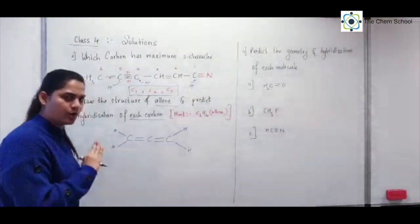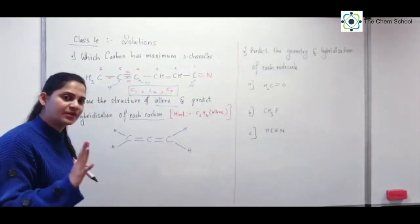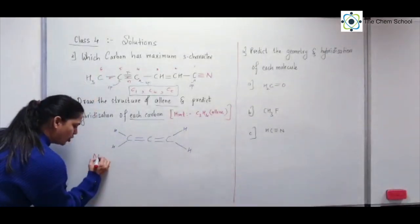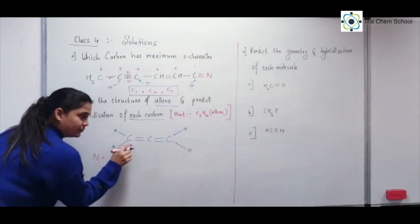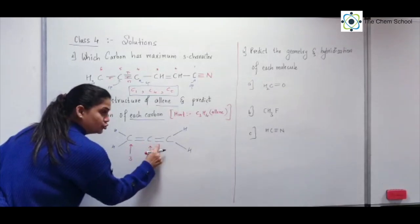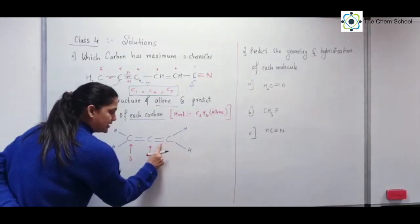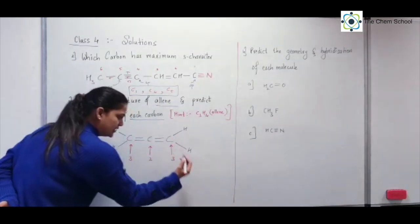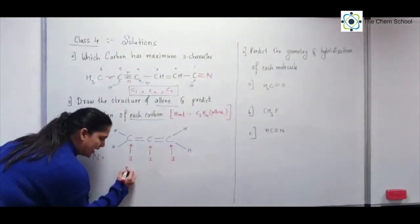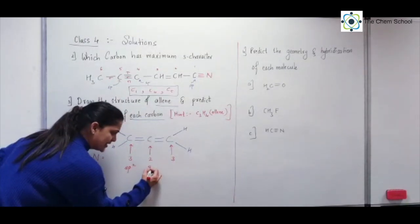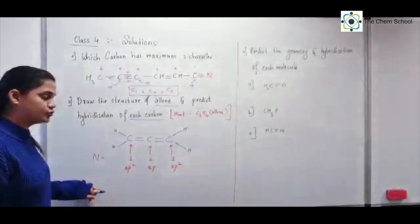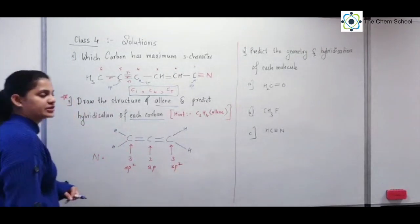All carbons have four bonds, so no lone pair tension — just count sigma bonds. The end carbons each have 3 sigma bonds (sp2: 1s + 2p). The central carbon has only 2 sigma bonds (sp: 1s + 1p). So for allene: end carbons are sp2 hybridized and the central carbon is sp hybridized. Mark this question as important — allene's structure is frequently tested.